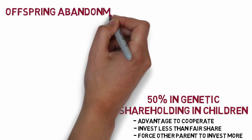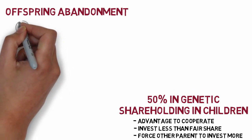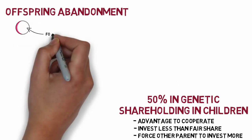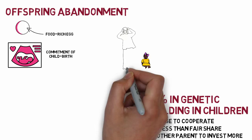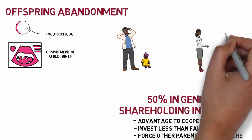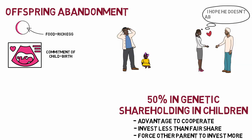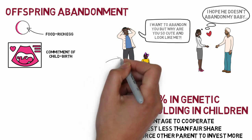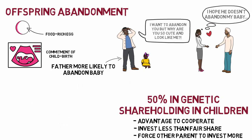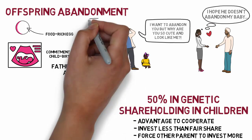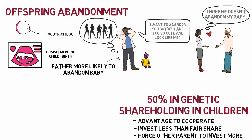Females tend to lose more if children die than the father does, because she has a high investment in the form of a large food-rich egg and the commitment of childbirth. If she abandoned the children in the care of the father and went off with another male, the father could retaliate by abandoning the baby, and she would need to invest more to bring a new substitute child. Hence, during the early stages of child development, the father has a higher probability of abandoning the child rather than the mother.